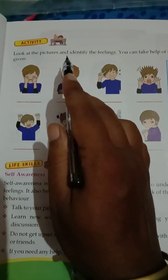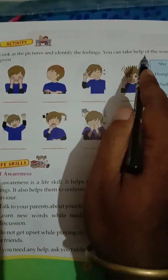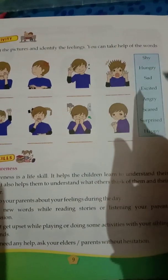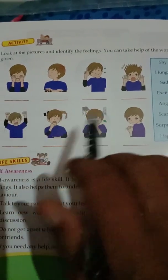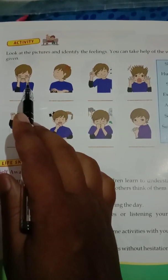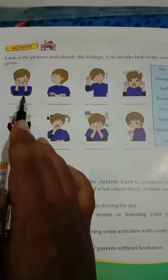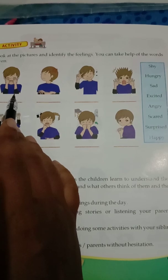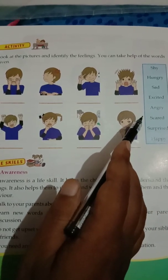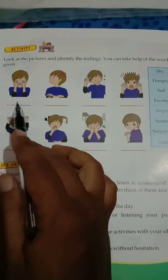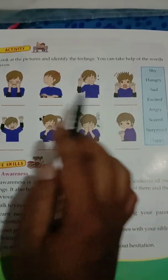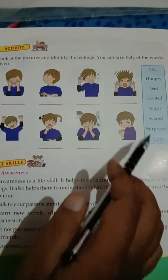Look at the pictures and identify the feelings. You can take help of the words given in the box — with the help of these words you have to fill in the blanks. What is this boy's feeling? He is feeling sad. What is this boy's feeling? This boy is feeling angry. What is this boy's feeling? This boy is feeling happy.